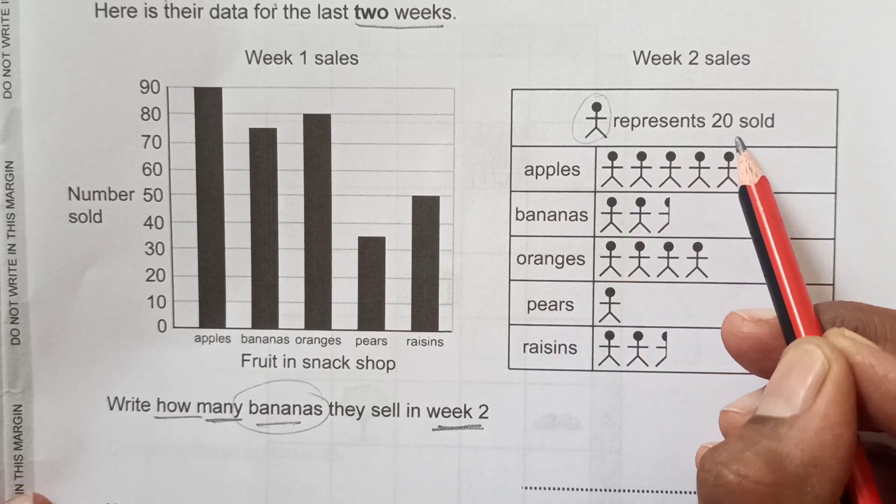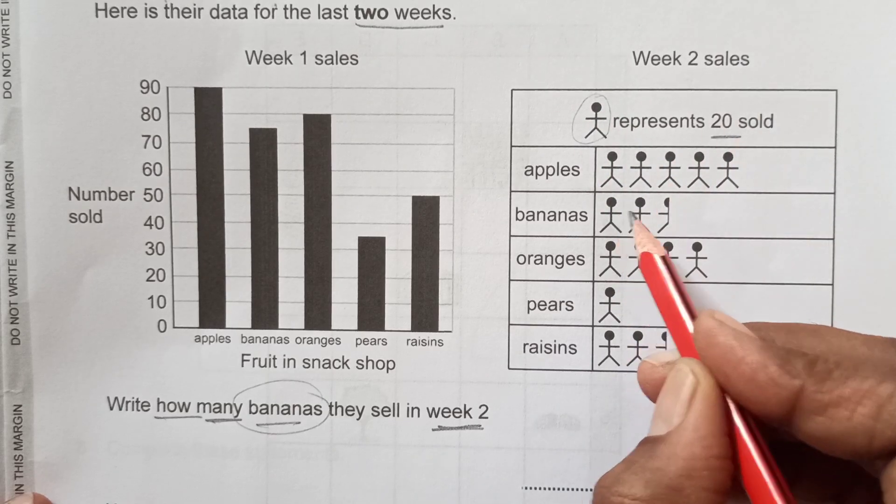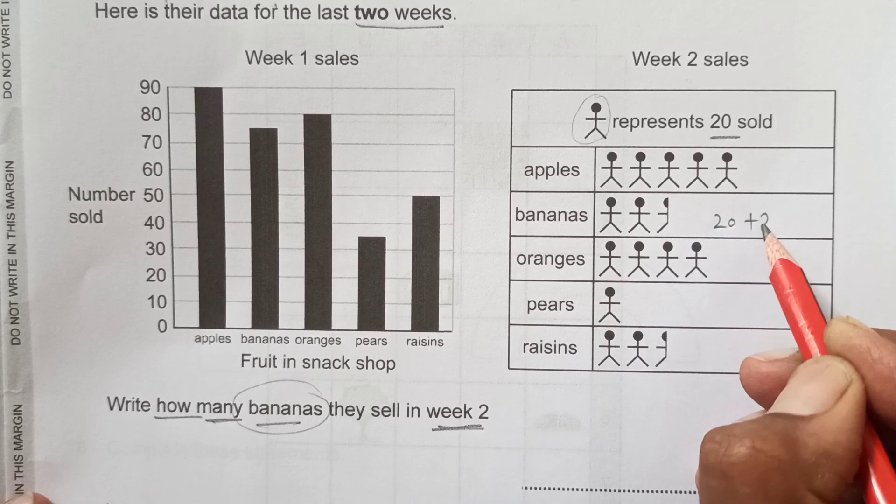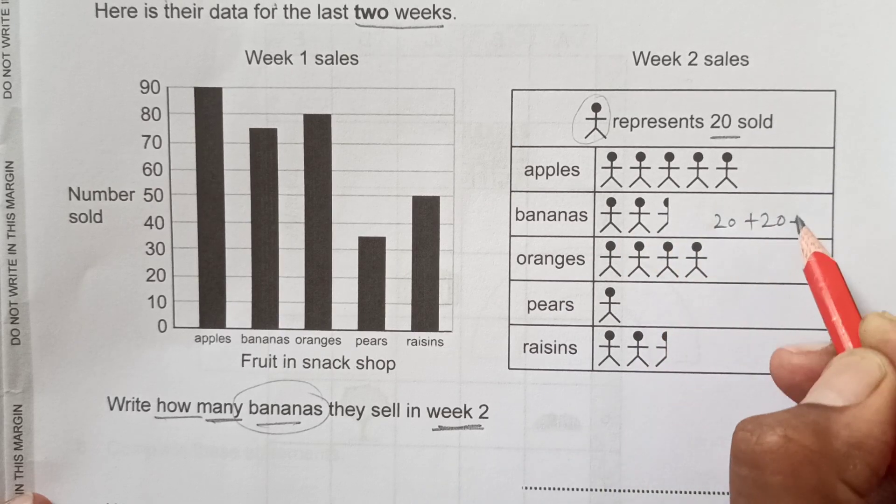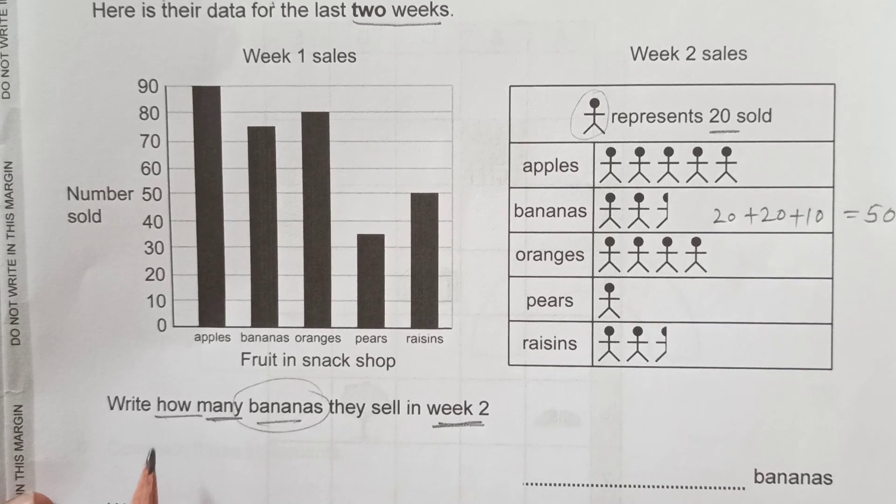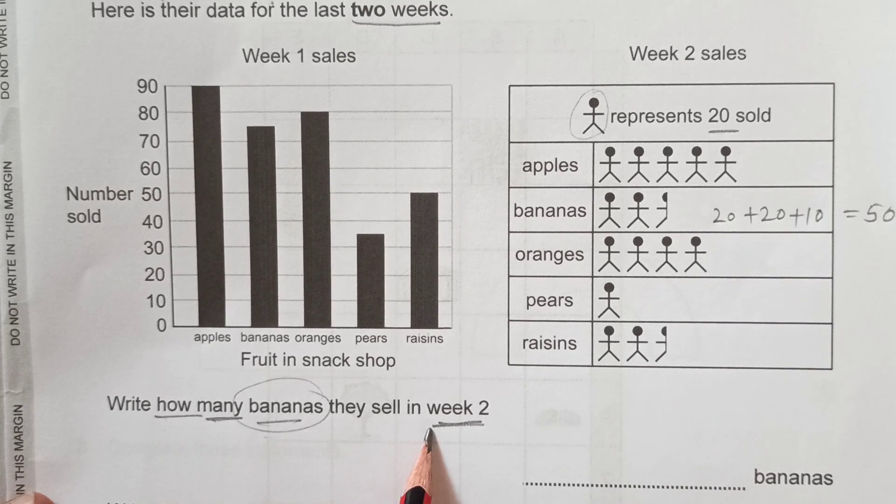The key is this one. This figure represents 20. We have here 20 plus 20 plus half of that is 10. That means this is 50. Write down how many bananas they sell in week 2. That is 50 bananas.